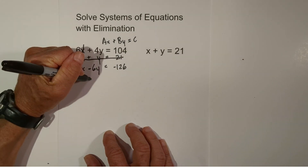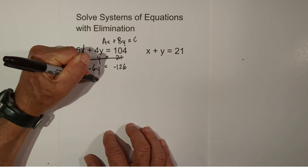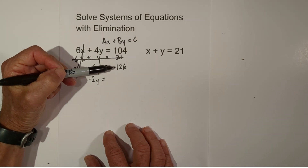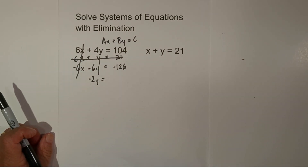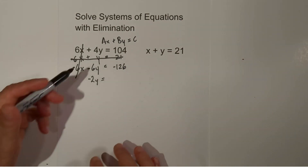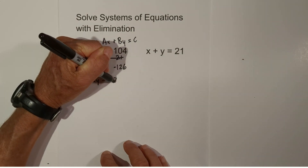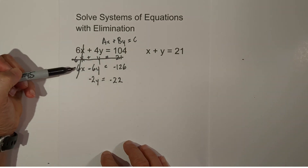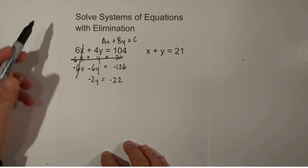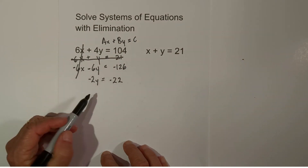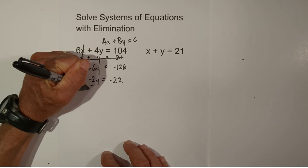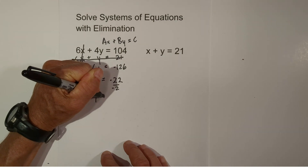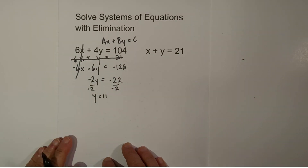The x terms cancel. We have negative 6y and positive 4y, which gives us negative 2y. Then negative 126 minus 104 equals negative 22. So negative 2y = negative 22. We divide both sides by negative 2, and y equals 11.